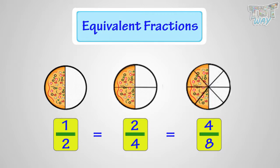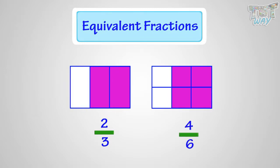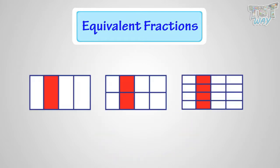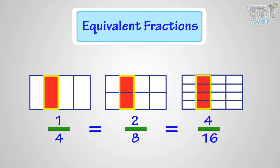Let's see more examples of equivalent fractions. The shaded portion in two figures is representing the same portion of this figure. But here it is 2 by 3, and here it is written 4 by 6. So 2 by 3 and 4 by 6 are equivalent fractions, as both are representing the same part of the rectangle. From this picture, you can see 1 by 4 equals 2 by 8 equals 4 by 16, as these are representing the same portion of a rectangle. So, kids, now you know what are equivalent fractions.